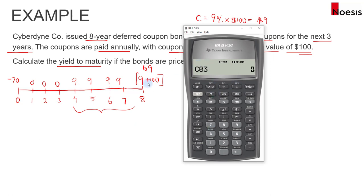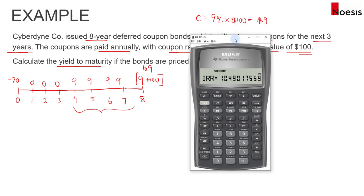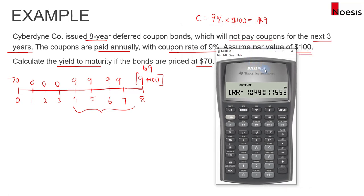C03 will be 109. Frequency is 1. Then go over to IRR and press compute. The yield to maturity of this deferred coupon bond is 10.49%.